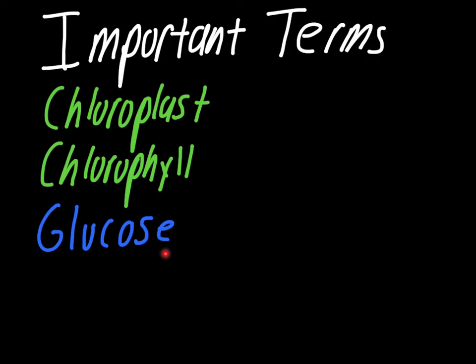Just a couple of important terms and a very basic introduction to the idea of photosynthesis, which we'll spend a lot of time on this chapter. We'll get into all of the details about how exactly plants absorb sunlight, and what they do with the carbon dioxide and water to change it into glucose. This is one of the more involved processes we're going to talk about throughout the course of the year, so it's definitely something you have to stay on top of.